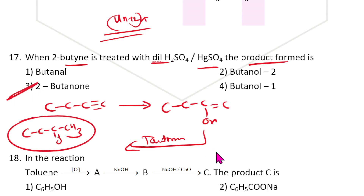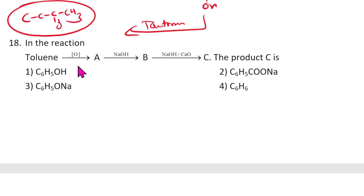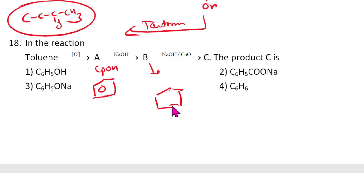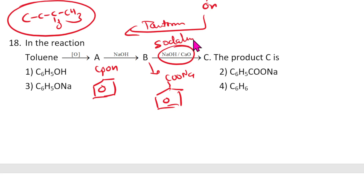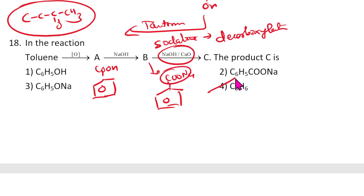Toluene oxidation gives -COOH (benzoic acid). Benzoic acid reacts with NaOH to give sodium benzoate (C6H5-COONa). Then soda lime causes decarboxylation — removing CO2 — and benzene is the final product.